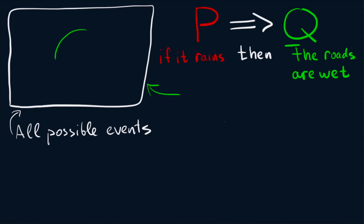I suggest that we represent Q as a big green circle. So this green circle consists of all events where the roads are wet. For example, it contains an event where the roads are wet on a Tuesday, the roads are wet on a Monday, the roads are wet in Canada. So it contains all possible events where this condition is satisfied.